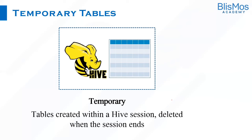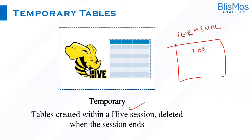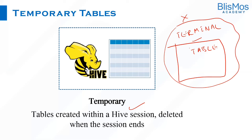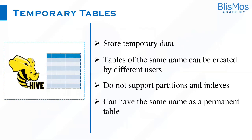Apart from managed tables and external tables, we also have temporary tables in Hive. Temporary tables are created within a Hive session — meaning you've opened a terminal and created a table. The lifespan of a temporary table is only until you close that terminal. The moment you close the terminal or the session ends, the temporary table is also gone. Temporary tables are used to store temporary data.